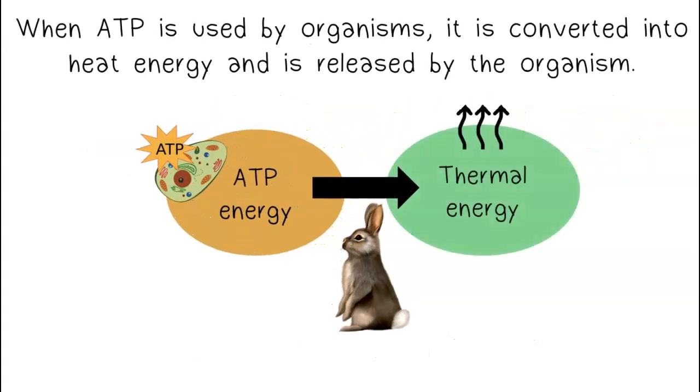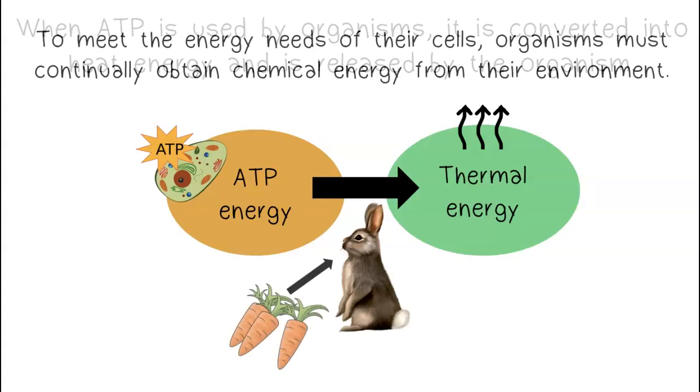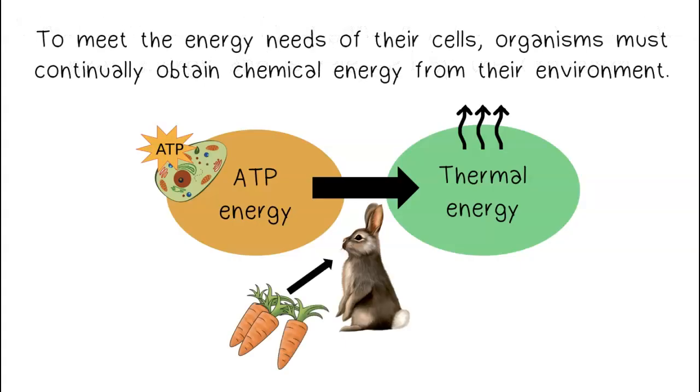When ATP is used by organisms, it is converted into heat energy and is released by the organism. To meet the energy needs of their cells, organisms must continually obtain chemical energy from their environment.